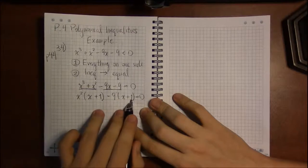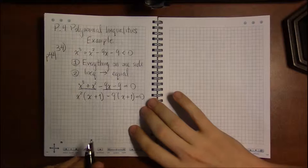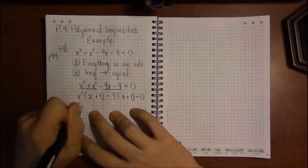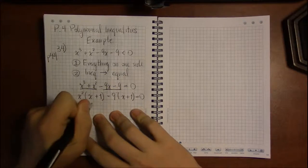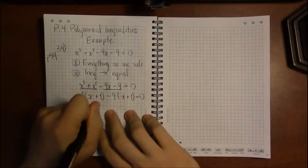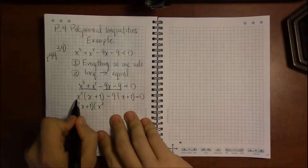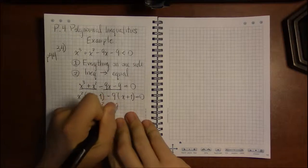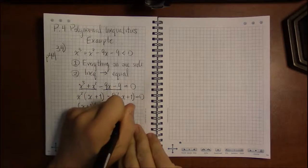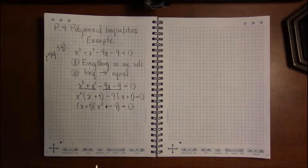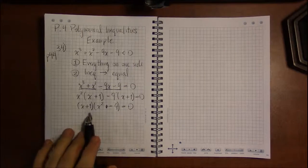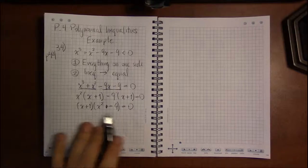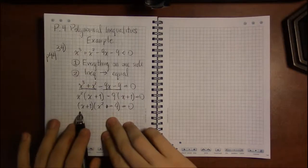Minus nine times x is minus 9x, and minus nine times one is minus nine — that's perfect. Now we finish factoring by grouping: x plus one is common to both terms, so pulling it out leaves x squared in the first term and minus nine in the second. This could be factored further as a difference of squares, but for now we have the product of two factors.